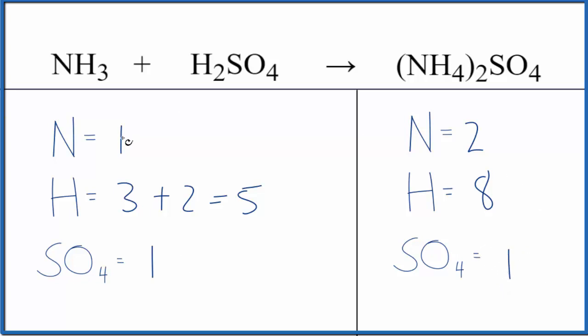Why don't we try to balance the nitrogens first to see what happens. We'll put a two here in front of the ammonia. One times two, that gives us two nitrogens. Those are balanced.